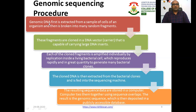After cloning the DNA fragments into a vector, each cloned fragment is individually amplified by replication inside living bacteria, which reproduce rapidly and generate large quantities. As the bacteria replicate, our DNA fragment of interest is also replicated. The cloned DNA is then extracted from the bacterial clones and fed into the sequencing machine.